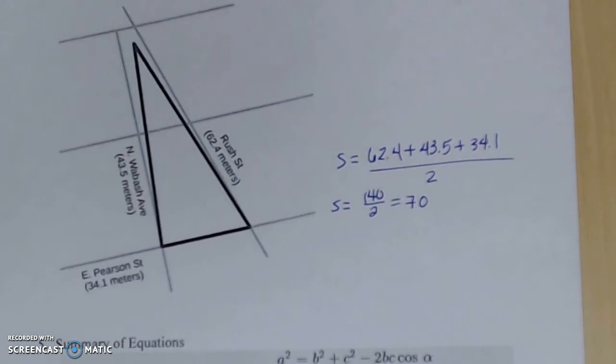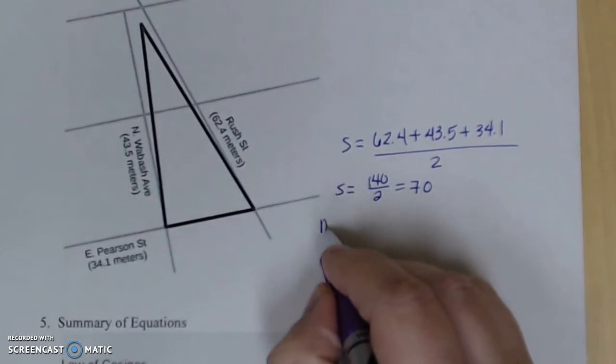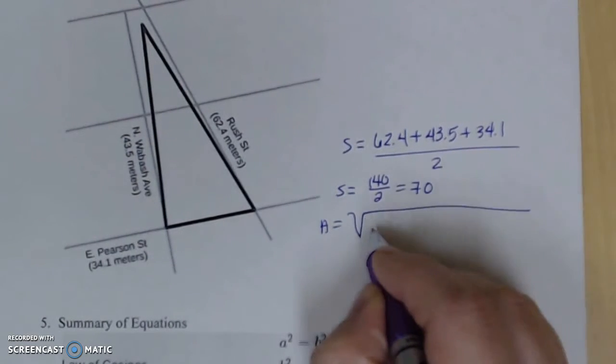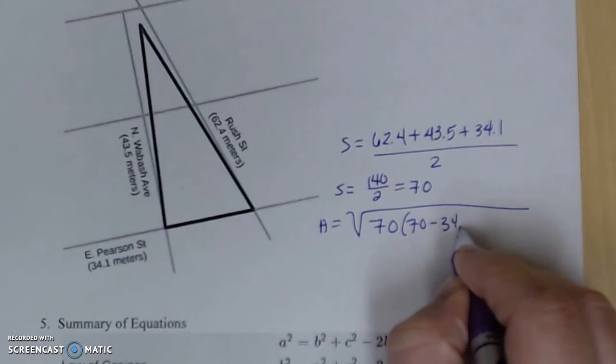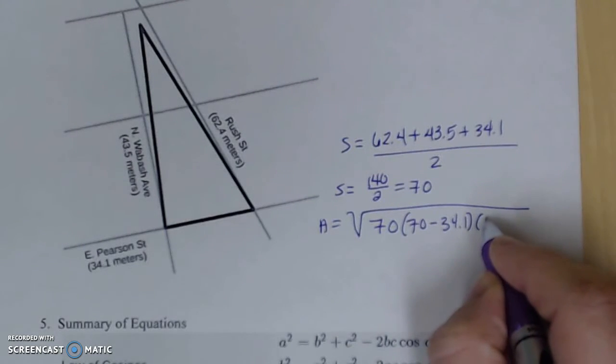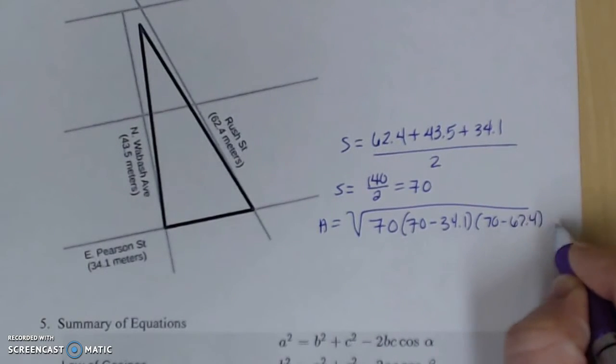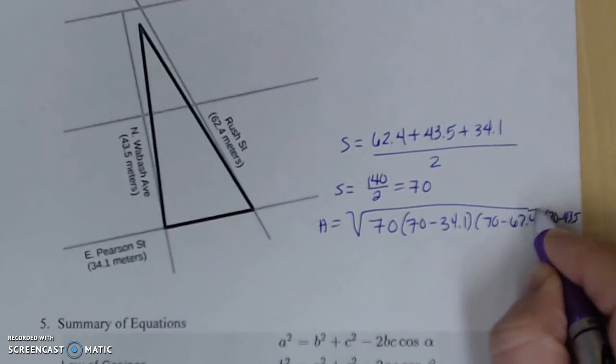It doesn't matter what you call a, b, and c. When you do area, you take the square root of s times s minus each of your sides. Order doesn't matter because multiplication is commutative.